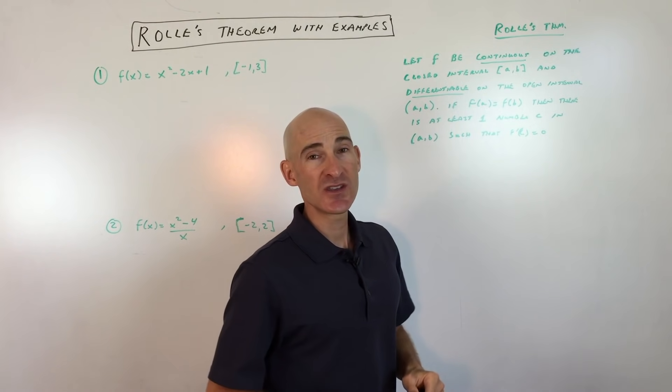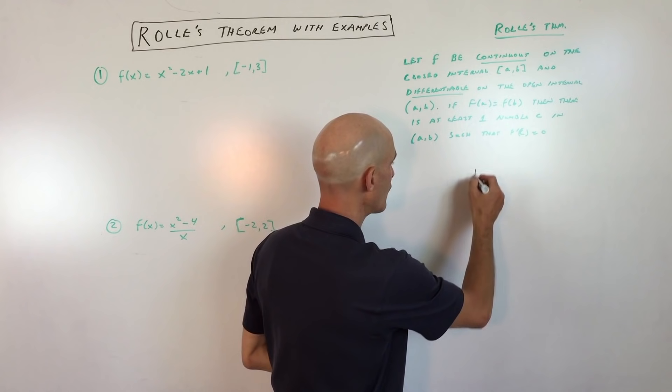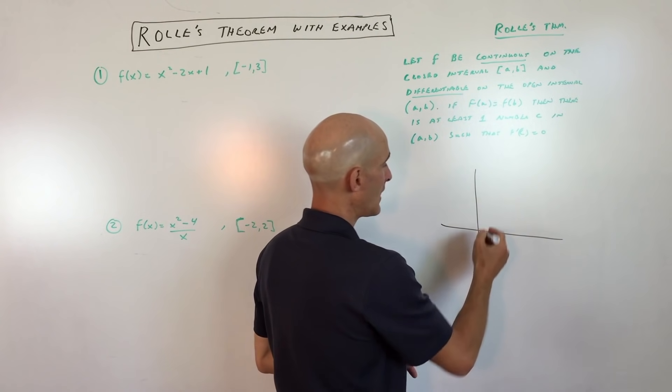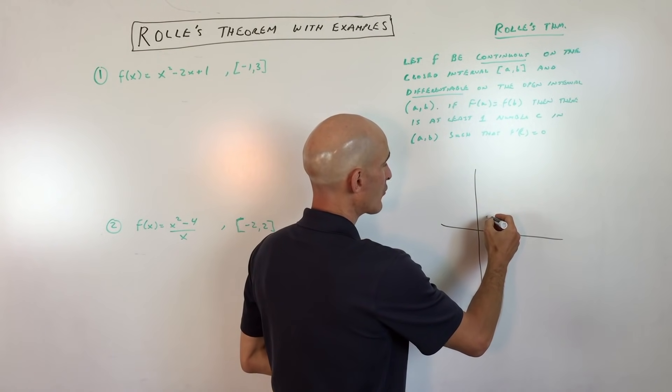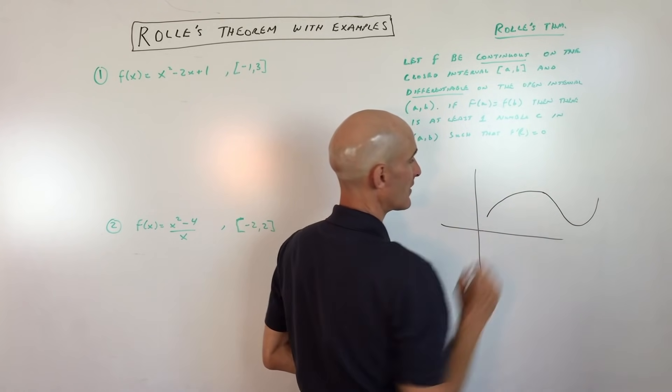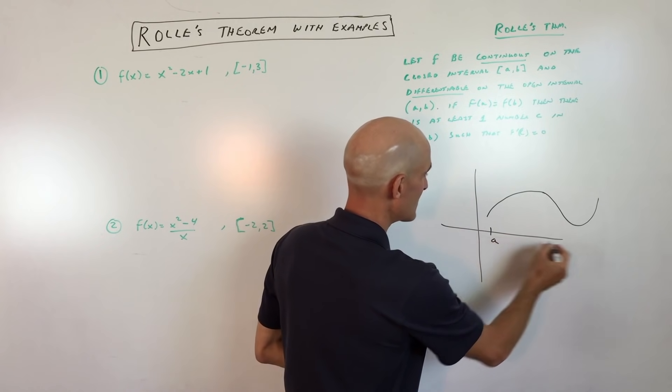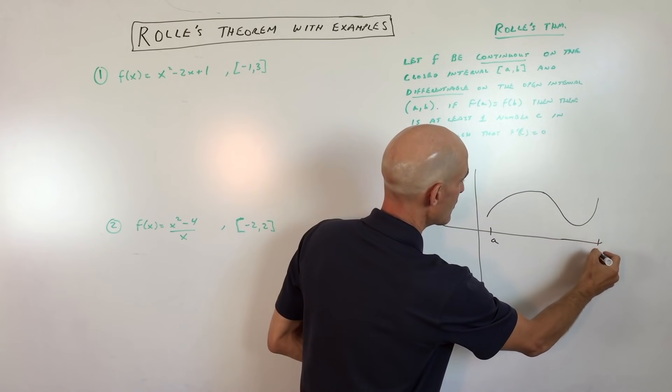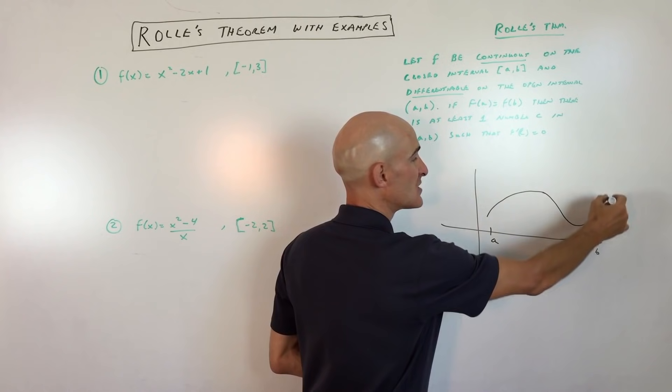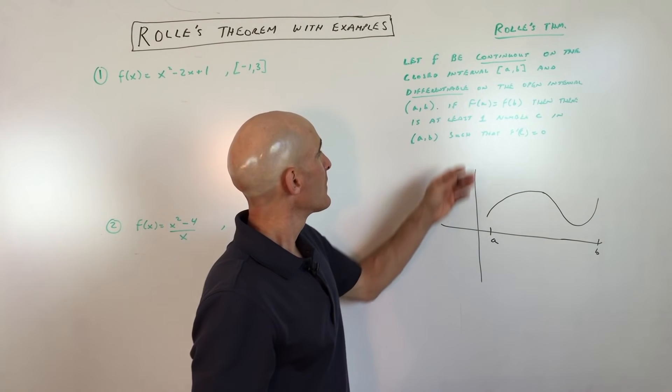Basically, when it says that it's continuous, that means that there's no break in the graph. So for example, if we were graphing this, and let's just say that the graph looks something like this, and let's say that this is a over here, and this is b over here, you can see that it's continuous, there's no breaks in the graph, I'm not picking up my pencil or my pen.